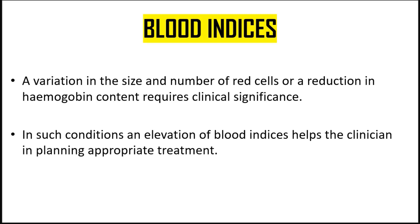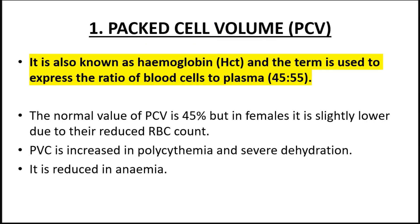Let's look at blood indices. Blood indices are simply a measure of the variation in size and number of cells, or a reduction in hemoglobin count. They show us the size of red blood cells and the amount of hemoglobin in them. Number one is packed cell volume (PCV), which expresses the ratio of blood cells to plasma. The normal value for PCV is 45 percent.